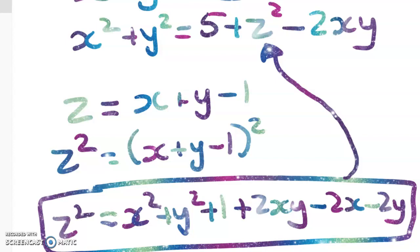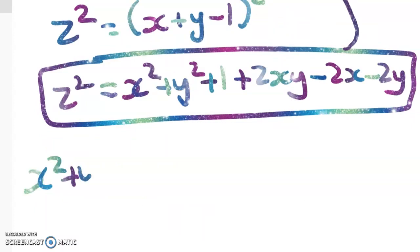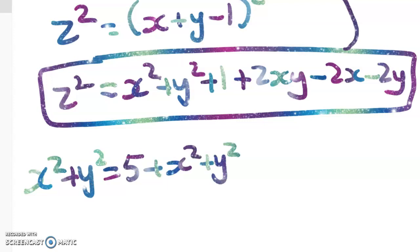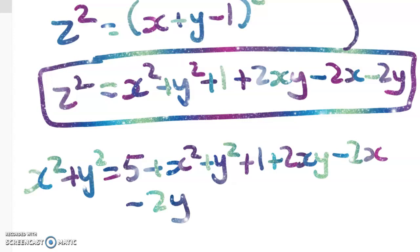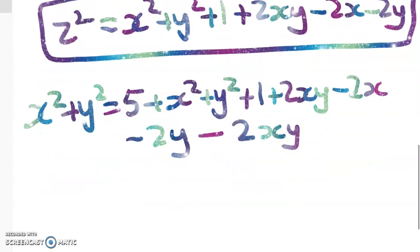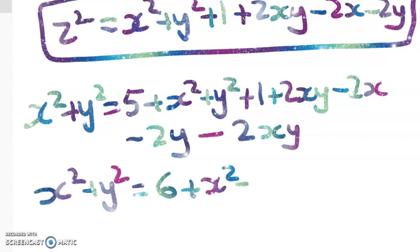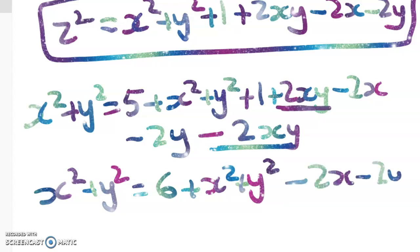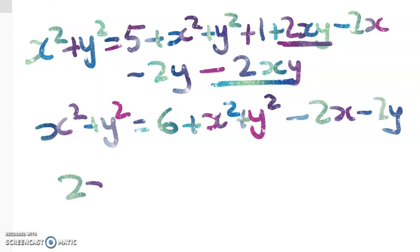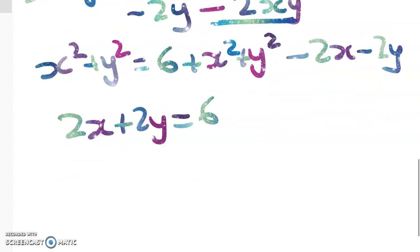Pause the video and go as far as you can, but please keep watching because I am going to show you the smart way to do this question at the end. So we get x² + y² equal to 5 plus all of that expansion, and don't forget we also subtract 2xy at the end — which is why we should be feeling happy because stuff is disappearing. We get x² + y² = 6 + x² + y² − 2x − 2y, so those cancel, leaving 2x + 2y = 6, which gives x + y = 3.